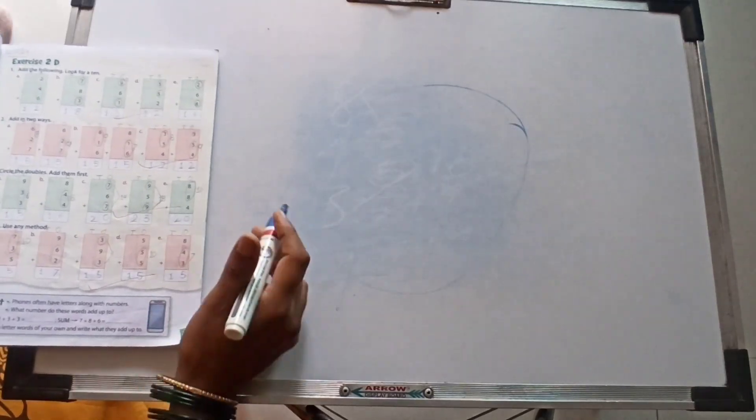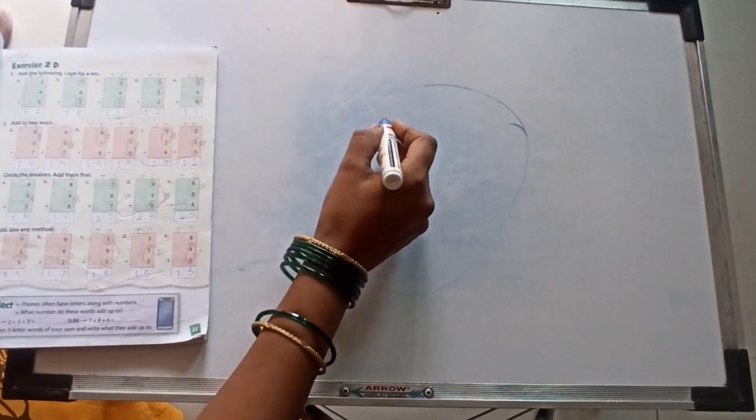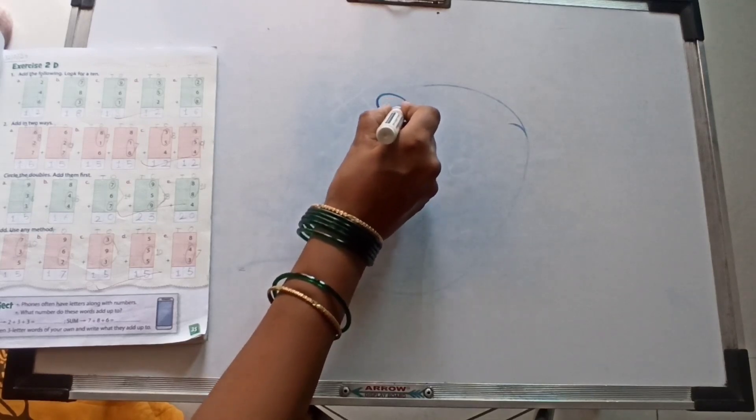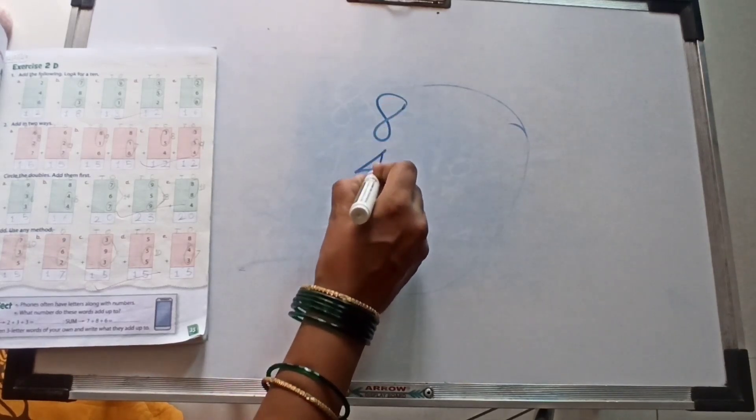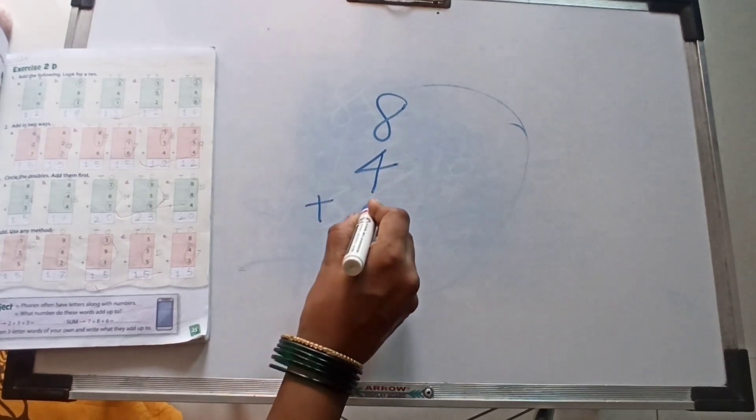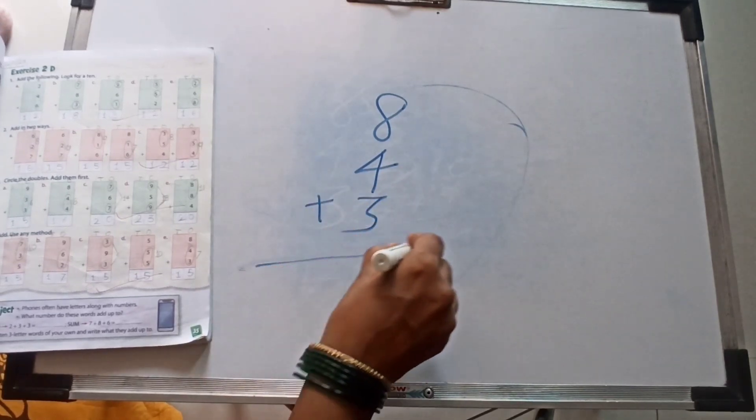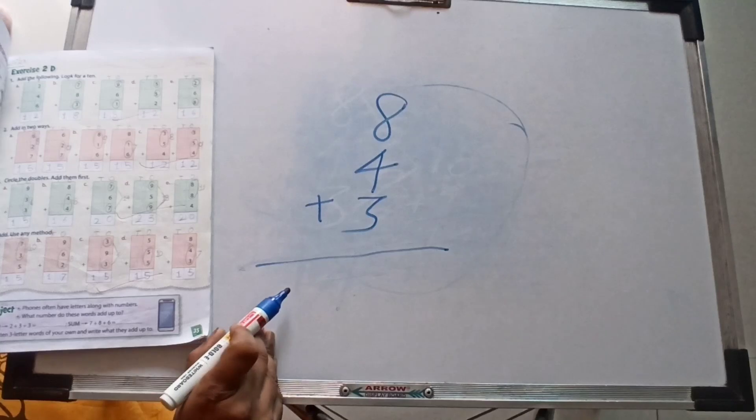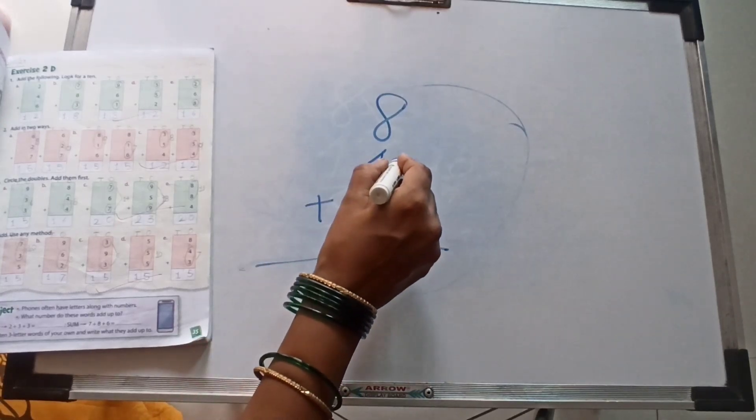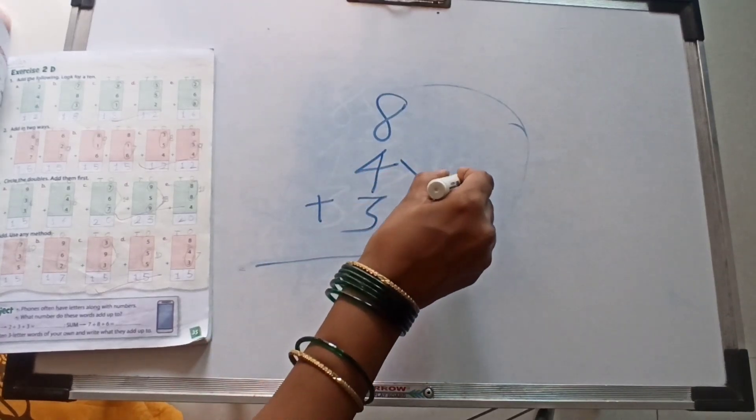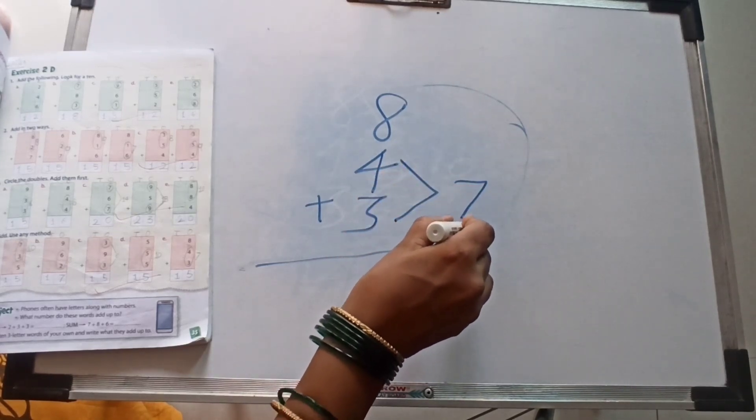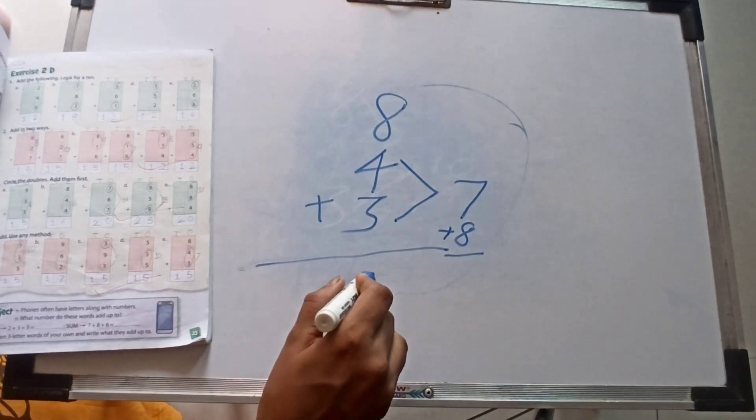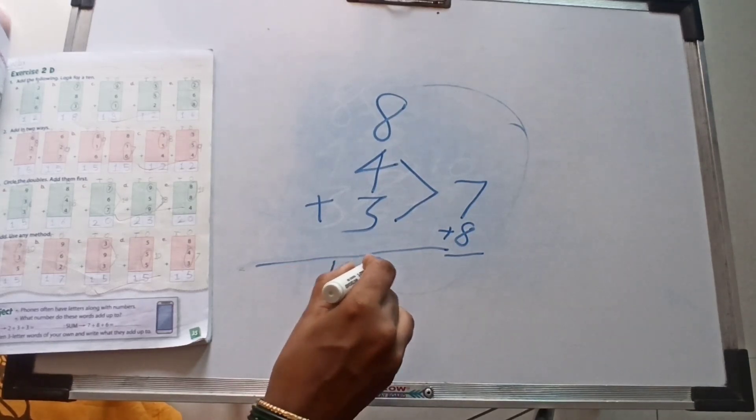Kids, now from question number 4, our last one answer. 8 plus 4 plus 3. This one, this one, 4 plus 3, 7. And 7 plus this one, 8. So 15.